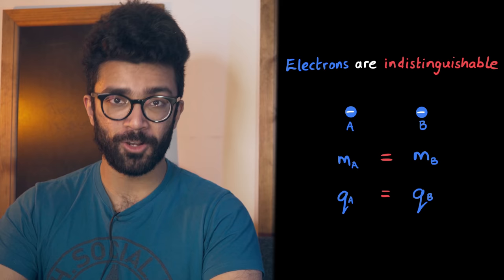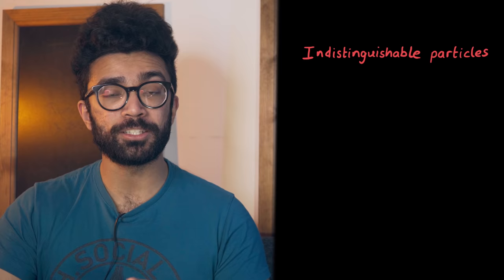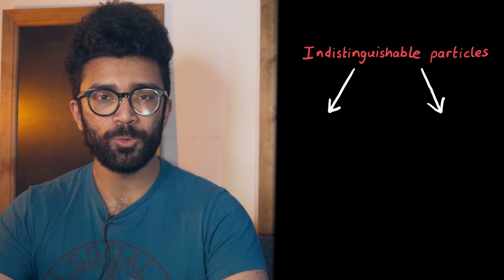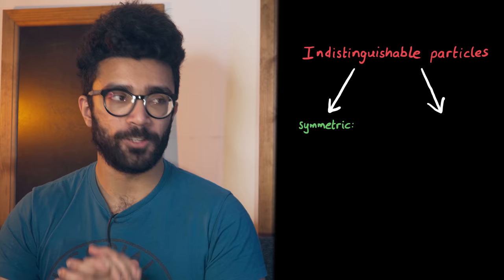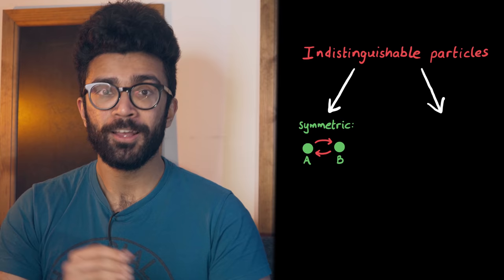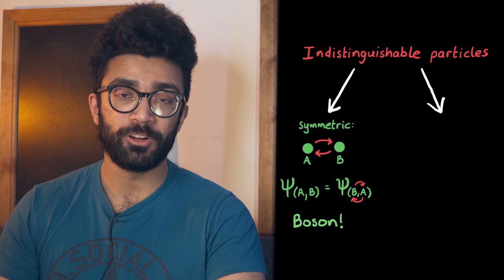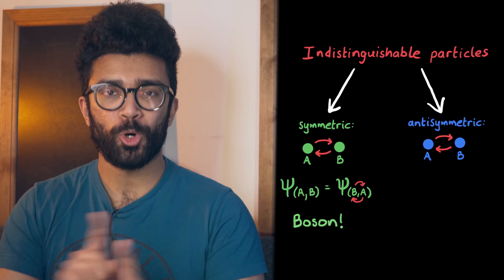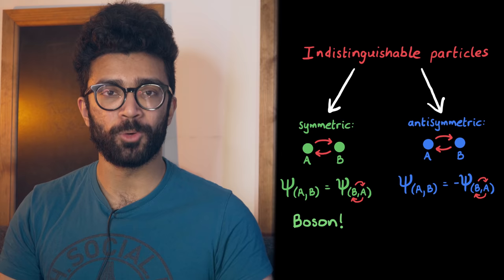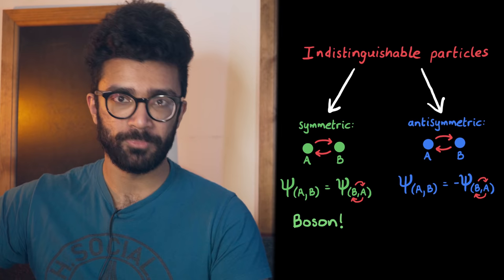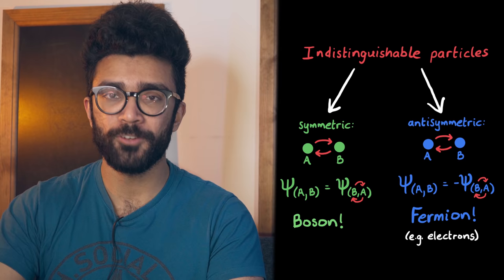For one, the wave functions of indistinguishable particles can fall into two different categories. Firstly, the wave function could be symmetric, meaning if we were to look at a system of lots of these particles and swap two of them, the wave function actually stays the same as it was before. It doesn't change. This type of particle is known as a boson. The other possibility is that the wave function is antisymmetric. This means that when we swap two particles, the wave function actually becomes negative of what it was before. So, every time we swap a pair of particles, the wave function becomes negative of the previous version. This type of particle is known as a fermion, and electrons are fermions.